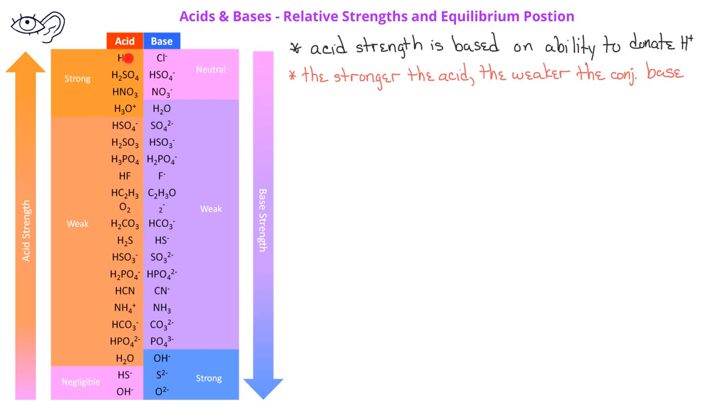So for example, HCl is a strong acid, but its conjugate base, the chloride ion, is essentially neutral.